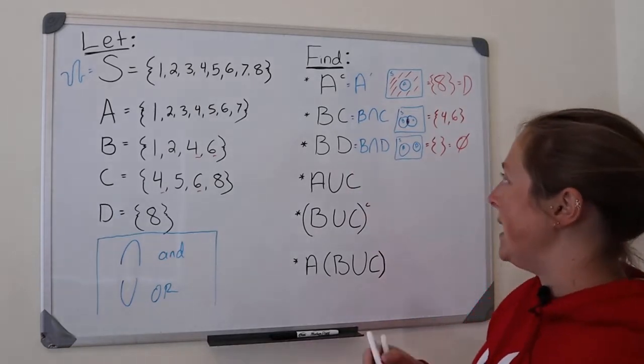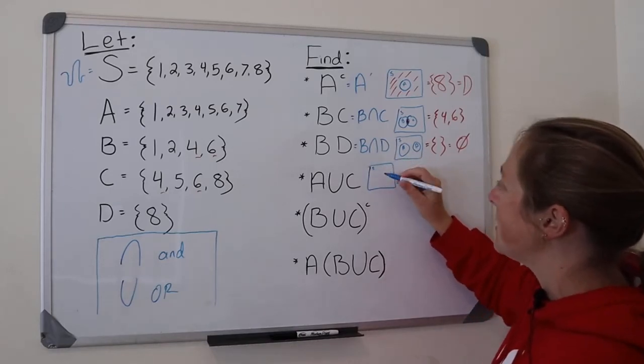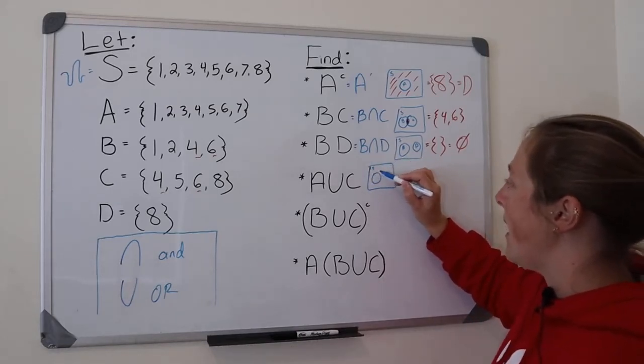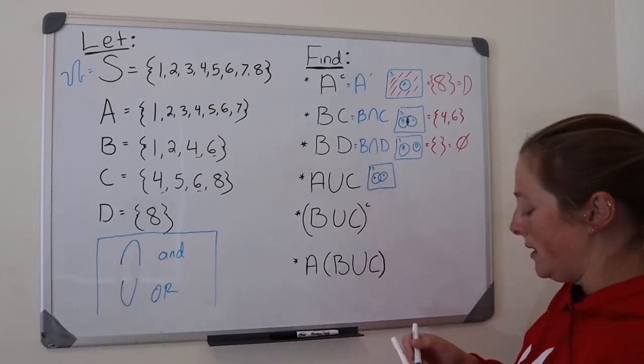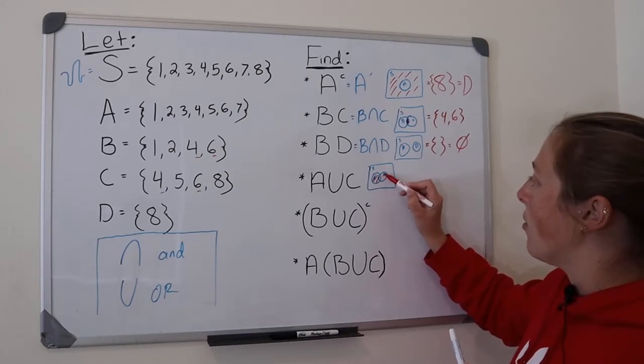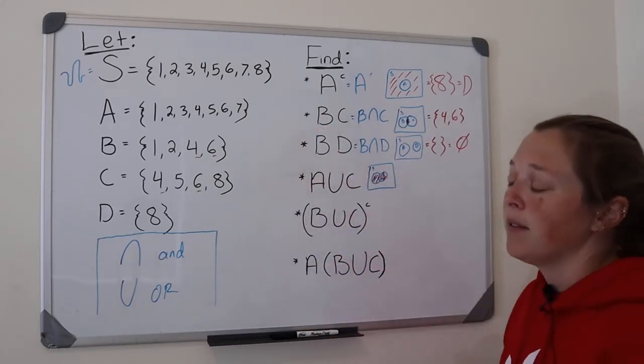A or C. The way you would draw this, this is my sample space, and I have A, and I have C. A or C would be anything in either or. If it's in A or C, then it's part of the union.